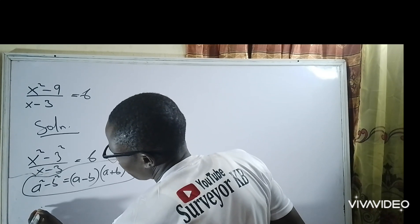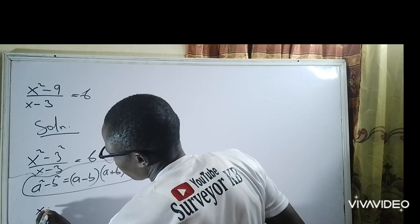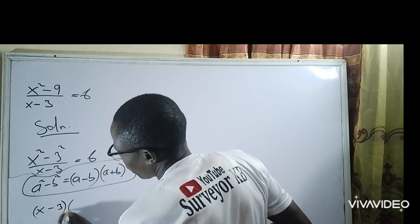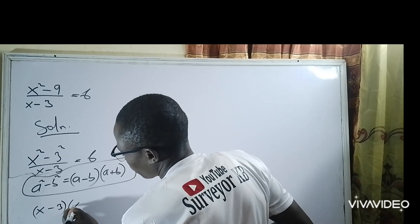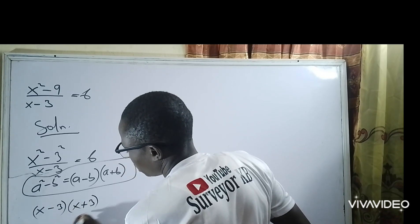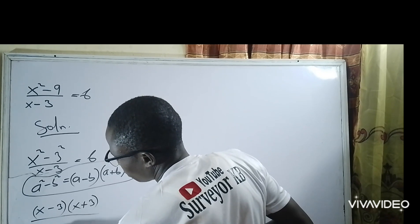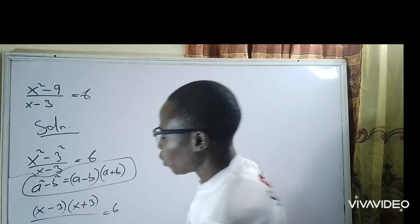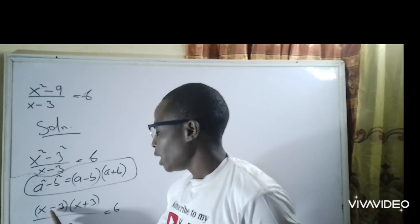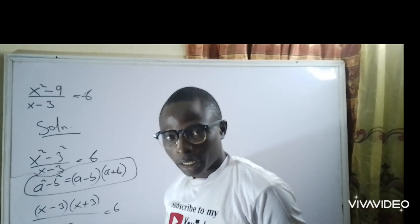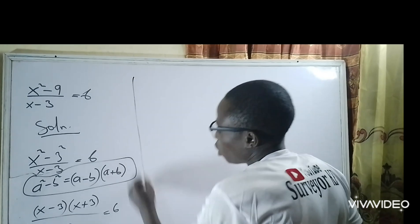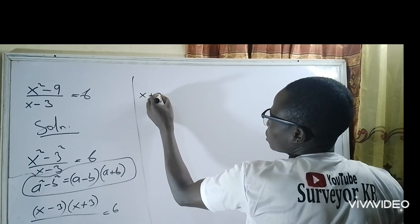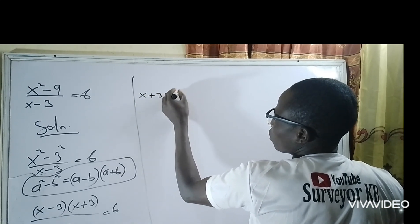Going by this, I can write x minus 3 multiplied by x plus 3, everything divided by x minus 3, equal to 6. We know that x minus 3 cancels with x minus 3, so I am left with x plus 3 equal to 6.